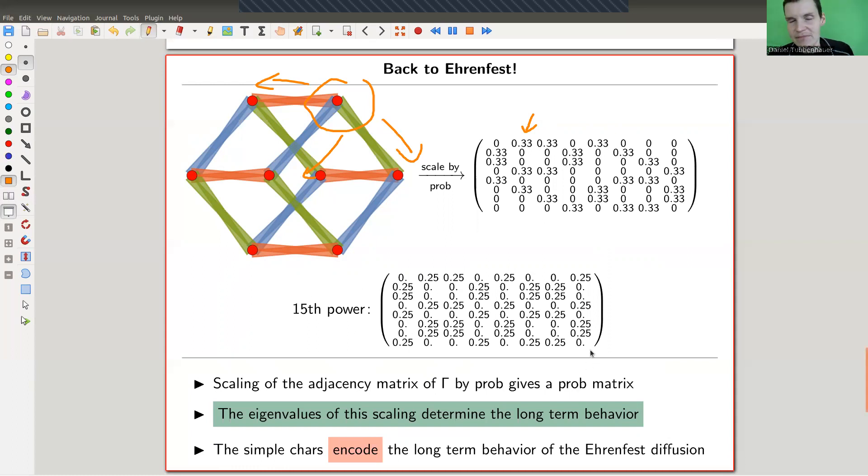In this case, the 15th power, I just decided to choose 15 randomly, basically stabilizes the situation with 1 over 4. So 1 over 4 in each second entry, right? So it depends a little bit whether you're in an odd situation, but that's about it. So scaling is your probability matrix. And the eigenvalues determine the growth of this matrix. And the growth of this matrix correspond in the model to the long-term behavior of the system. So whether your perfume particles go from one end of the room to the other or not, that depends then on the model. So in this simple example, the simple characters then encode the long-term behavior of the Ehrenfest diffusion.